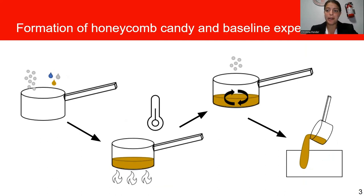In different experiments, we varied the corn syrup to sugar ratio, we changed the temperature at which we cooked the candy, as well as the amount of baking soda added to the candy.